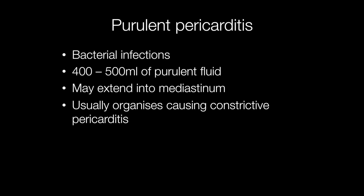Purulent pericarditis, as the name suggests, occurs as a result of bacterial infections, producing 400 to 500 mils of purulent fluid, and this may extend into the mediastinum. Over time, purulent pericarditis usually organises, but this may cause a constrictive pericarditis.